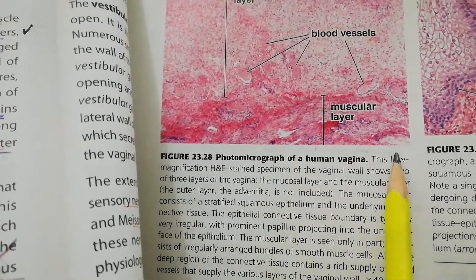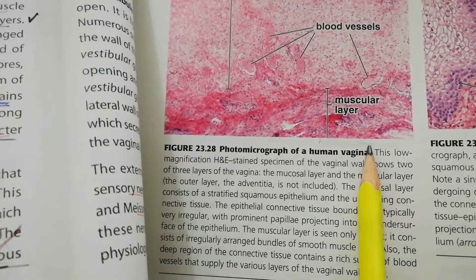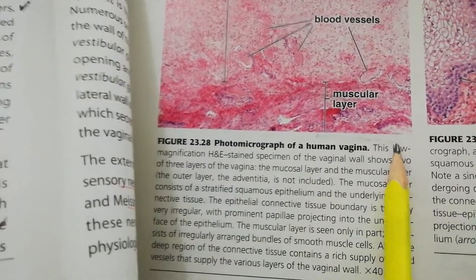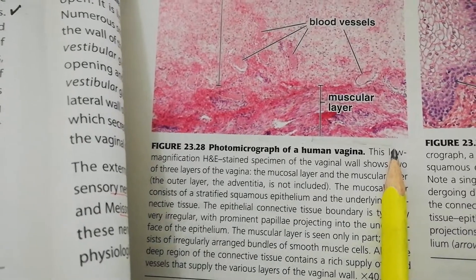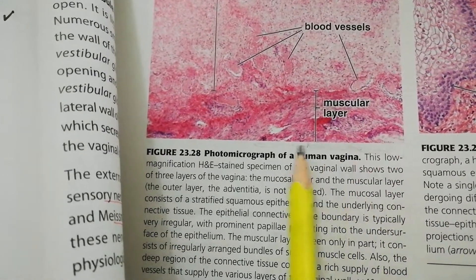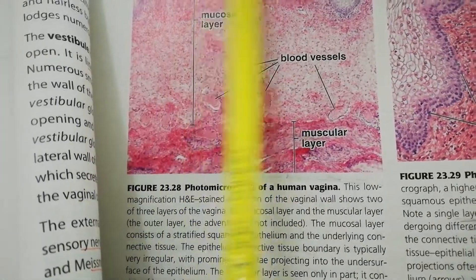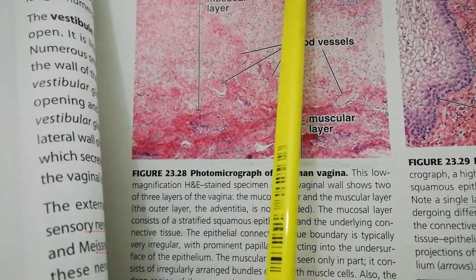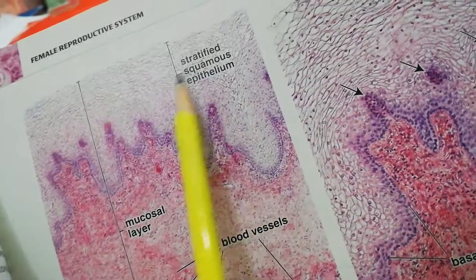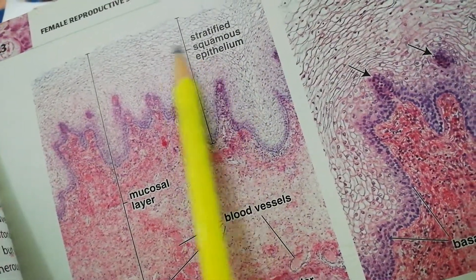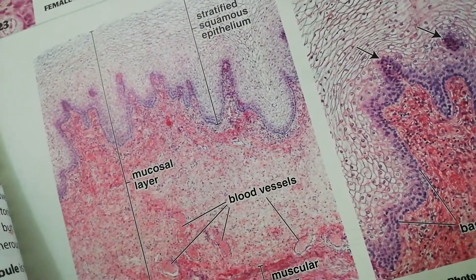The adventitia, which is not shown here, is made up of a dense connective tissue layer rich in elastic fibers, and is well marked with a venous plexus. Bundles of sensory nerve endings can also be found there. Importantly, there is no gland in this tissue. That is all about the vaginal wall.